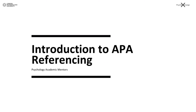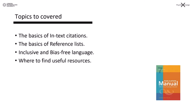Hi everyone, I'm Bernard, one of the psychology academic mentors. In this tutorial I'll be showing you how to do APA referencing. This session serves only as an introduction. For more information and to develop your skills further, please refer to the 7th edition of the APA publication manual, which is on the bottom right here. So in this session today I'll be covering the basics of in-text citations, the basics of reference lists, inclusive and bias-free language, which is a new development within the APA publication system, and finally where to find useful resources for you to develop your skills further.